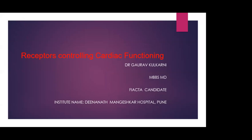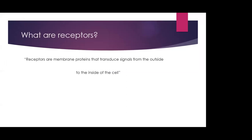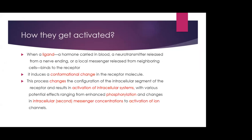Good evening everybody. Today my topic of presentation is receptors controlling cardiac functioning. So what are the receptors? Receptors are membrane proteins that transduce the signal from outside to the inside of the cell. They get activated when a ligand, hormone carried in blood, neurotransmitter released from a nerve ending, or a local messenger released from a neighboring cell binds to the receptor. This induces a conformational change in the receptor molecule, changing the configuration of the intracellular segment and resulting in activation of intracellular systems — with effects ranging from enhanced phosphorylation and changes in second messenger concentration to activation of ion channels.